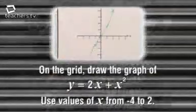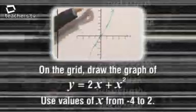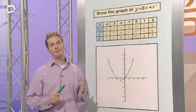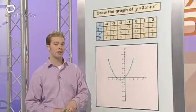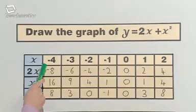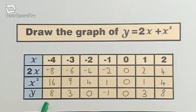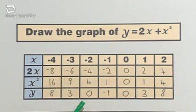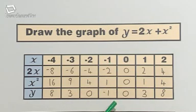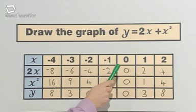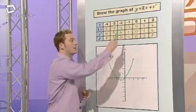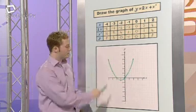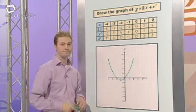First, I completed the table of values to work out the points for the graph. The points I plotted were: (−4, 8), (−3, 3), (−2, 0), (−1, −1), (0, 0), (1, 3), and finally (2, 8), which gave me this U-shaped curve.